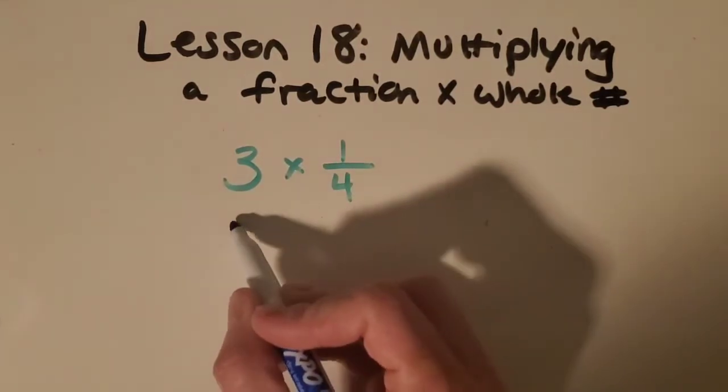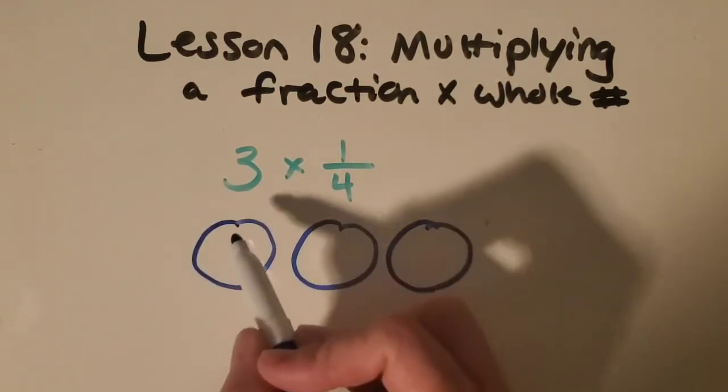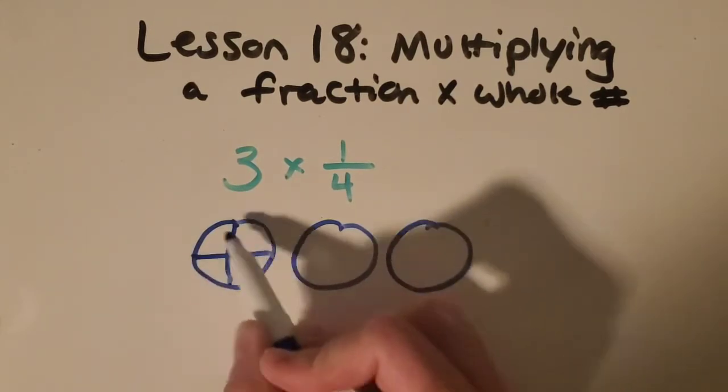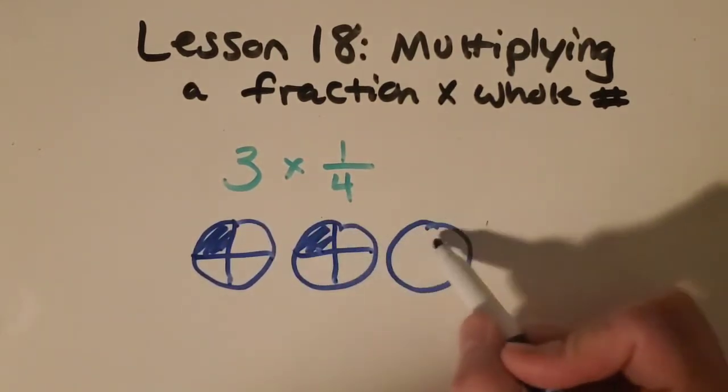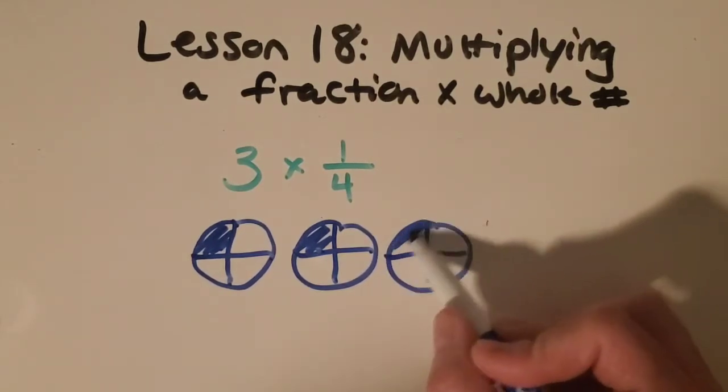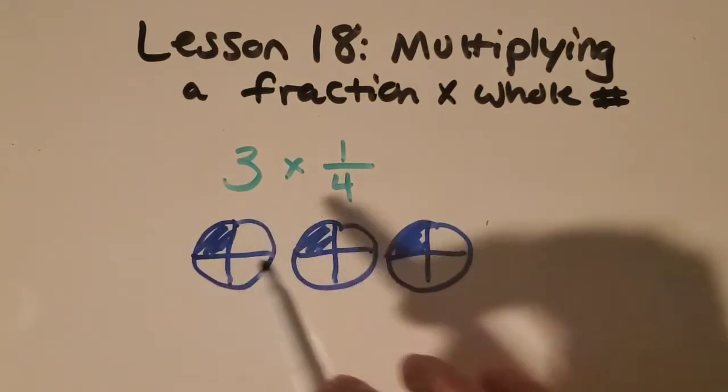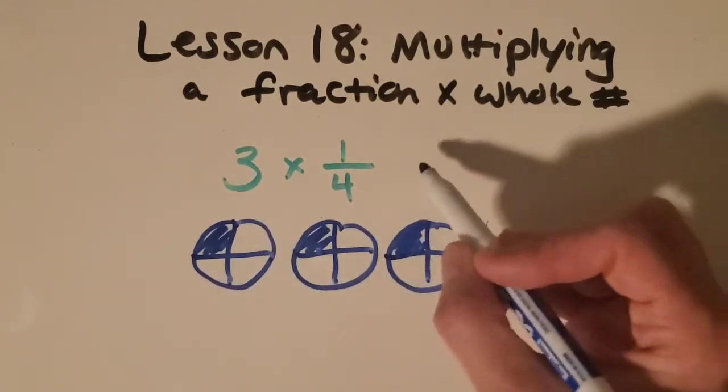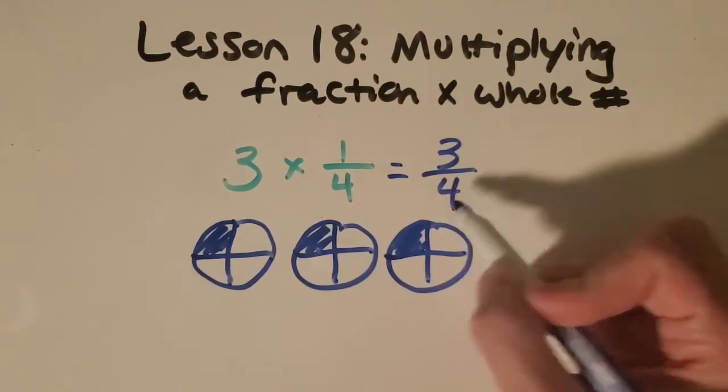And then it helps me to realize that it's really just, I'm going to draw one-fourth three times. So there's one, here's a second one, and there's three groups of one-fourth. And then it's really easy to count up that I have one, two, three-fourths. So this equals three-fourths.